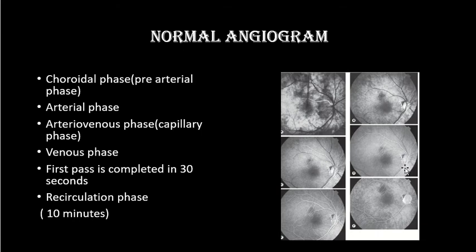Then there is the arteriovenous phase, also known as the capillary phase, where the dye passes from the arteries through the capillaries into the veins. Then comes the venous phase, where all the arteries and veins are filled. This first pass of the dye is completed within 30 seconds, and it takes about 10 minutes for the dye to leave the eye through different recirculation phases.